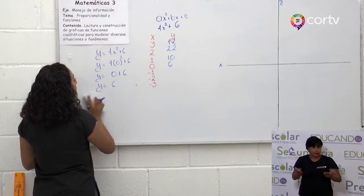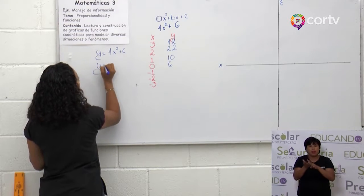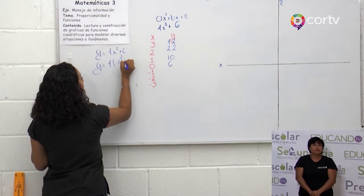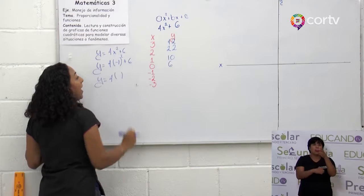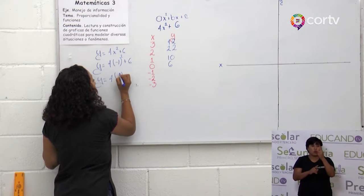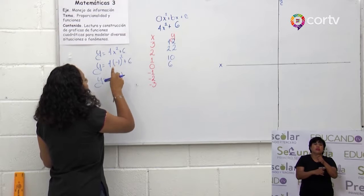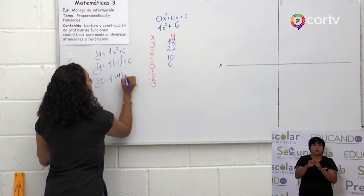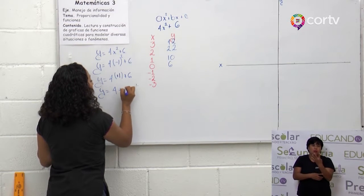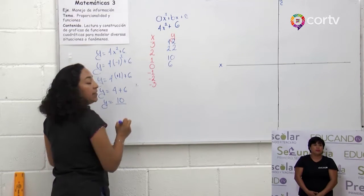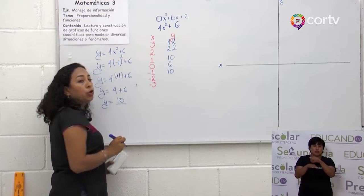Ahora vamos con el menos 1. Vamos a sacar el valor para menos 1. Aquí hay un paréntesis y este 1 hay que multiplicarlo dos veces: 1 por 1 = 1. Pero también al cuadrado le afecta al signo: menos por menos, más. Más 6. 4 por 1 = 4. Más 6 = 10. Este 10 va aquí, positivo también.